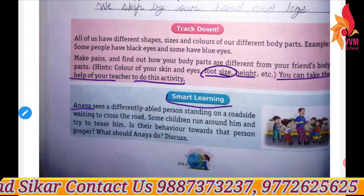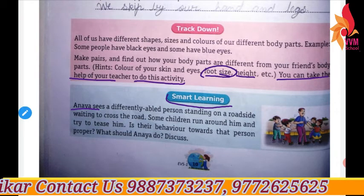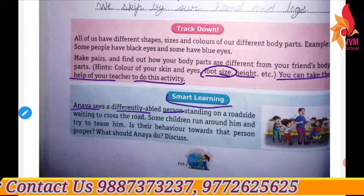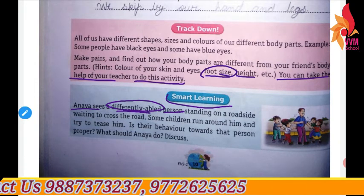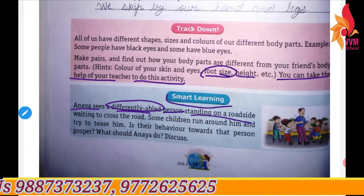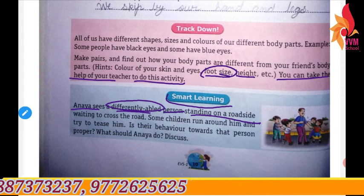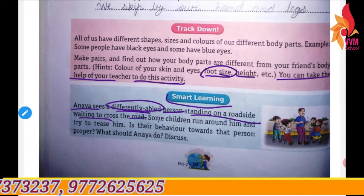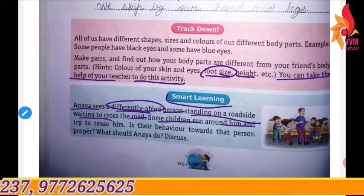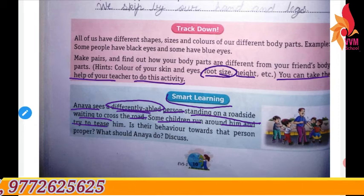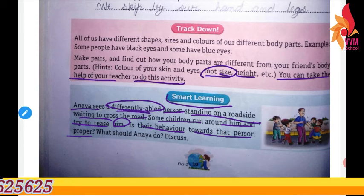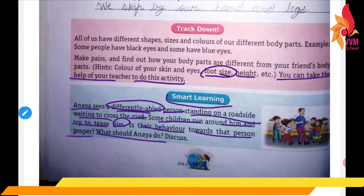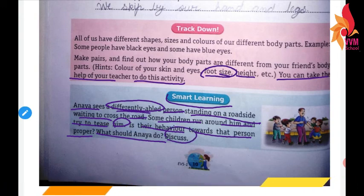In smart learning, Anavya sees a differently abled person. What is a differently abled person? What is the meaning — his hand or his legs are different. He is standing on a roadside, waiting to cross the road. Some children run around him and try to tease him. Is their behavior towards that person proper? What should Ania do? Discuss it.